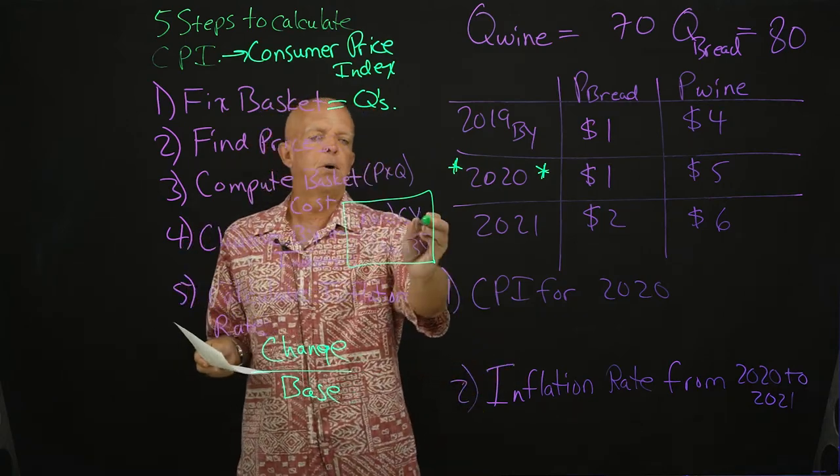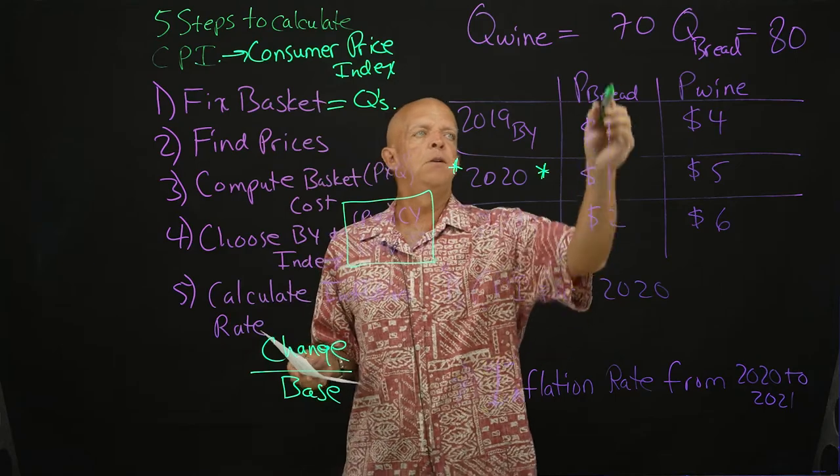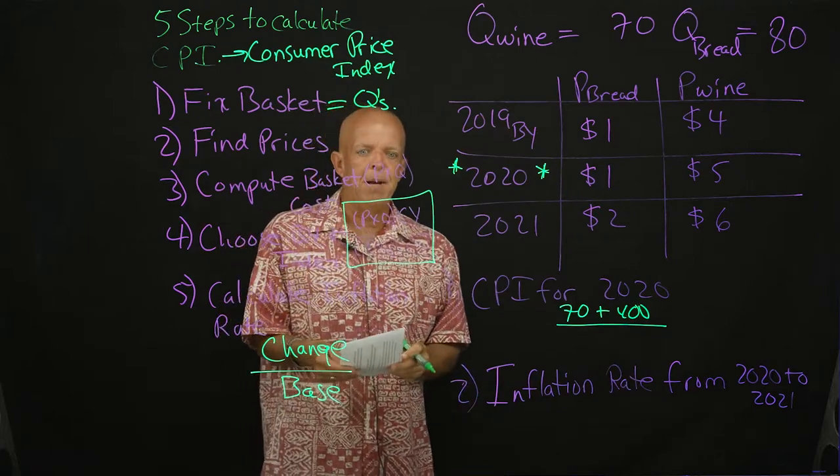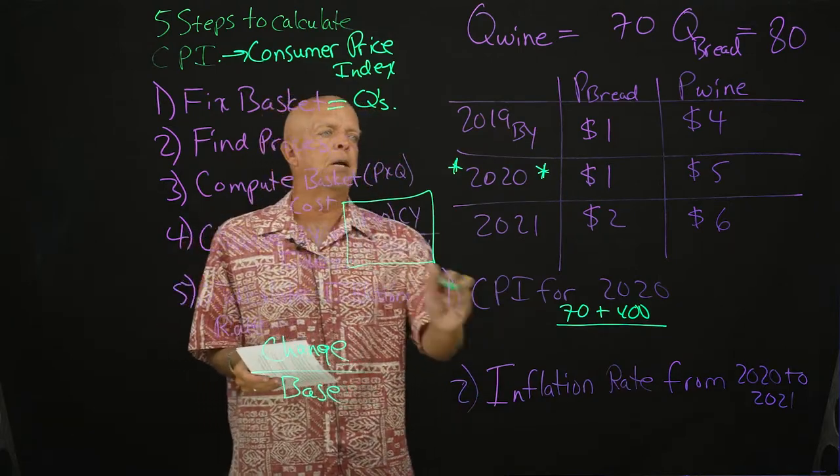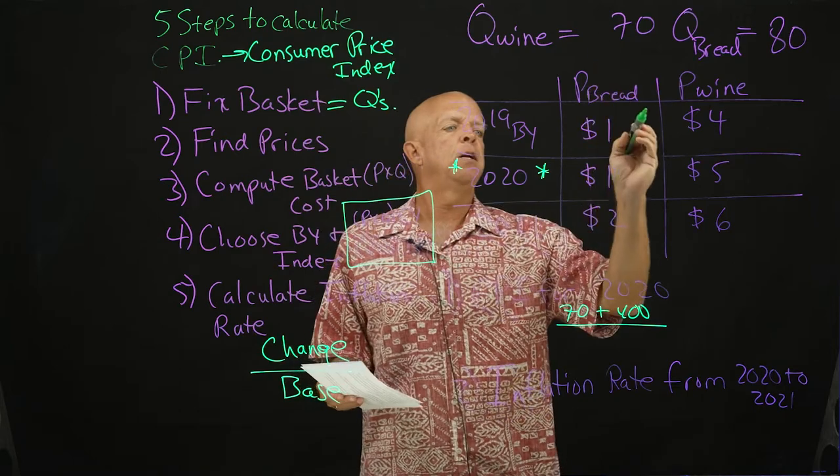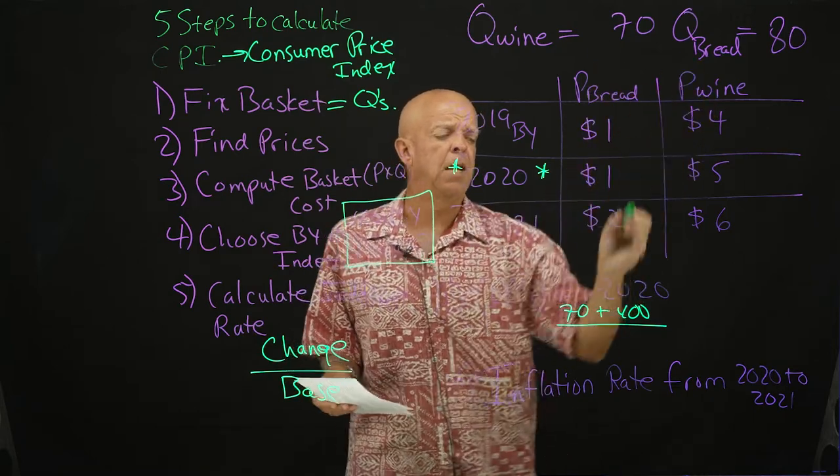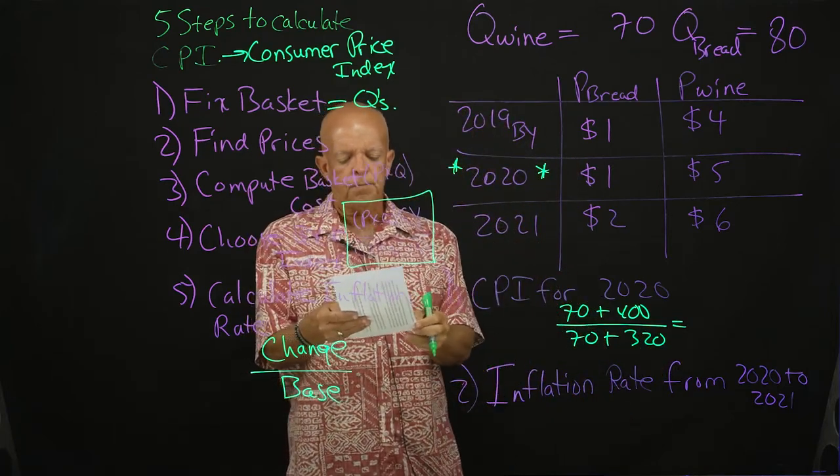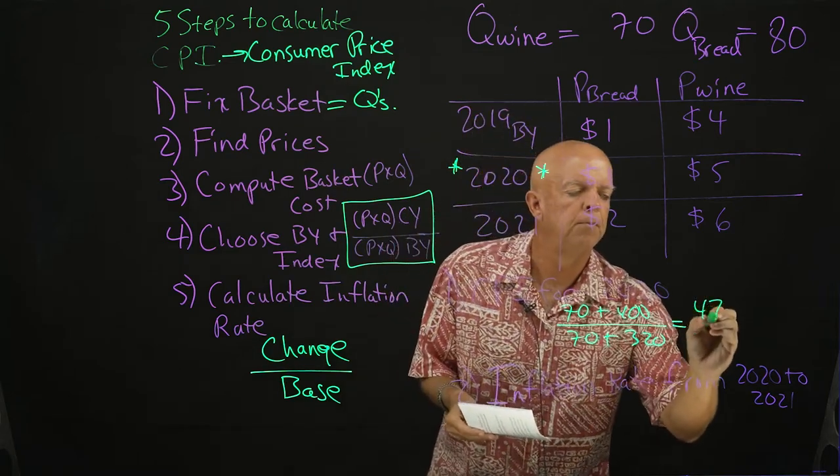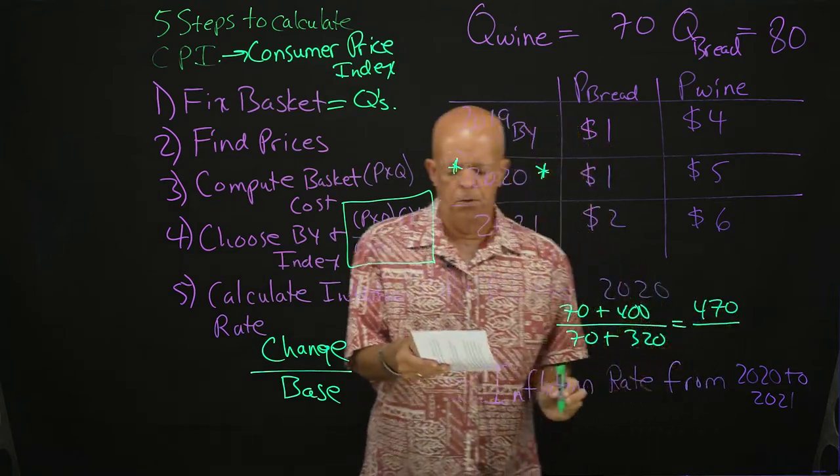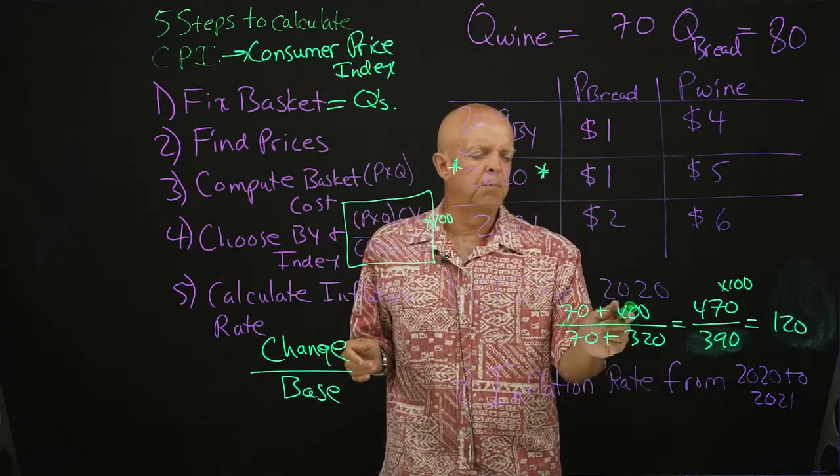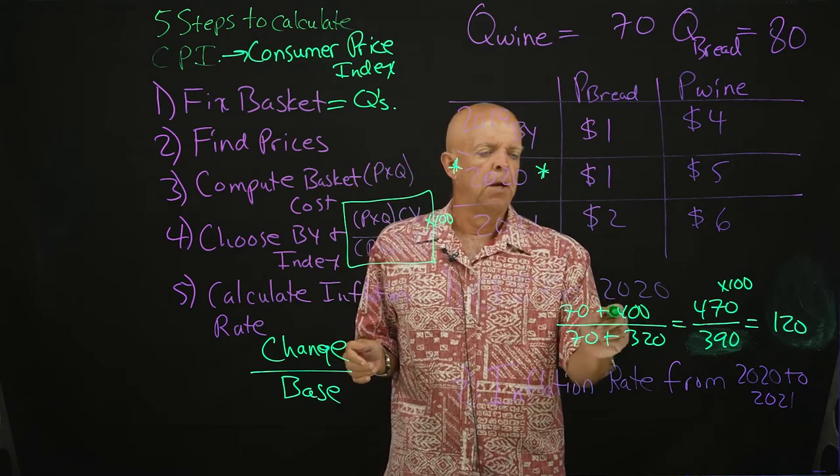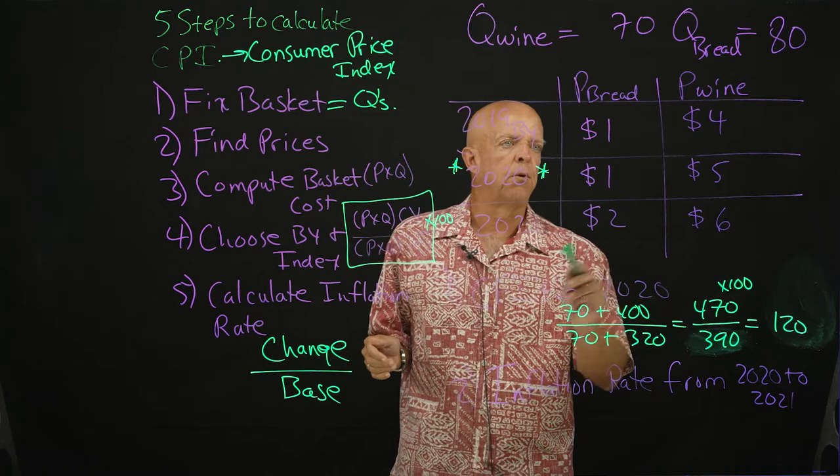We know what the quantities are, we know what the prices are, we're going to be calculating the basket costs, and we're going to be using this formula right here. So price times quantity for the current year, that would be 1 times 70 plus 5 times 80 over the base year price times quantity. So that is going to be 1 times 70 plus 4 times 80.